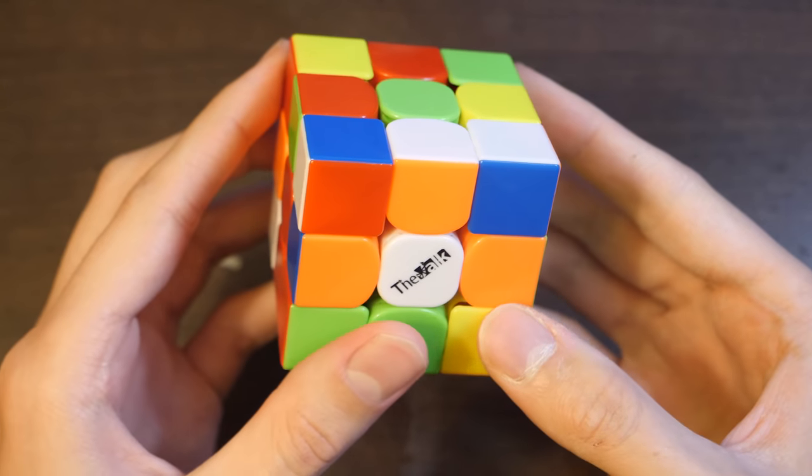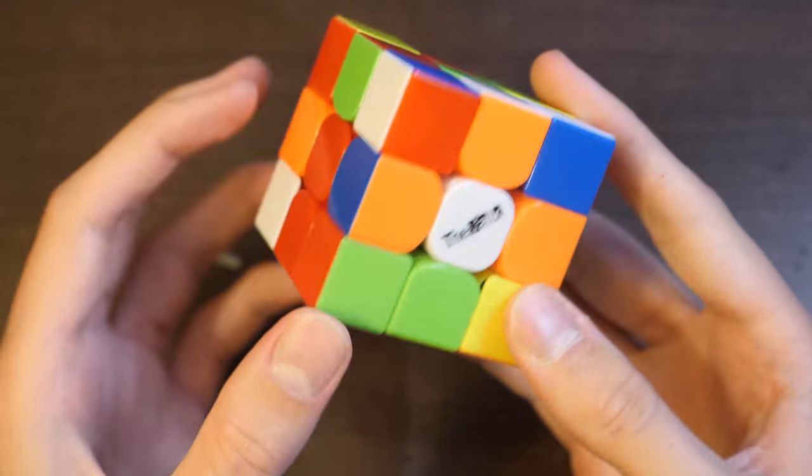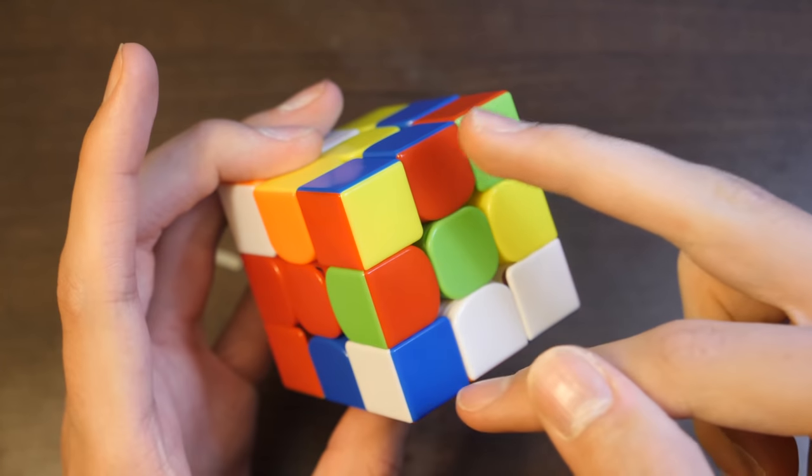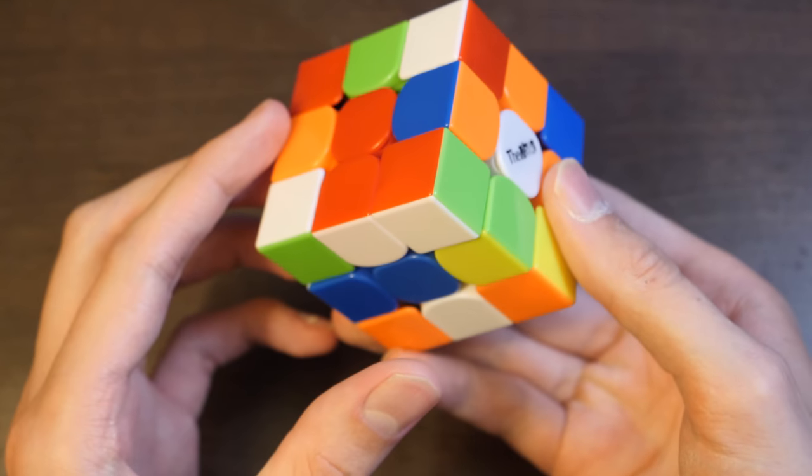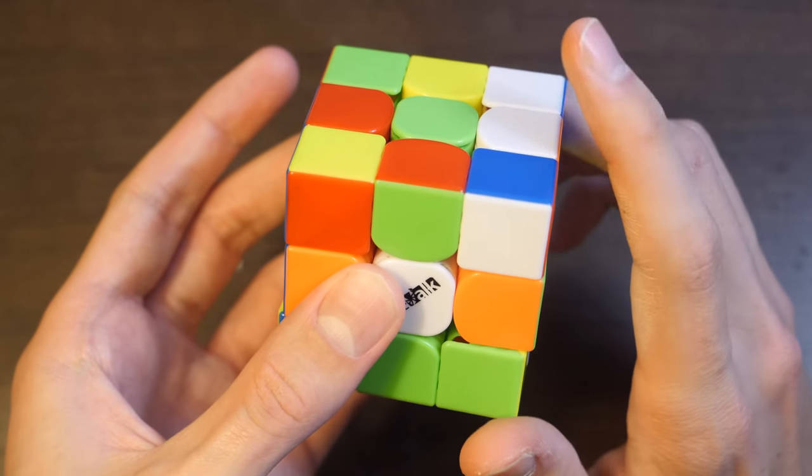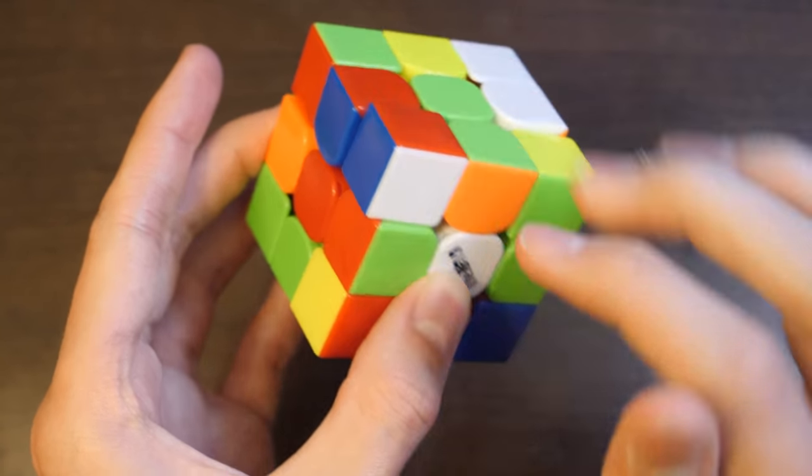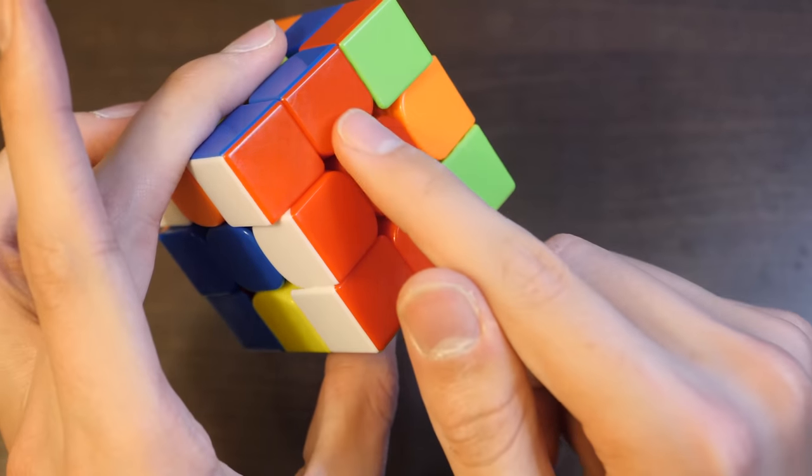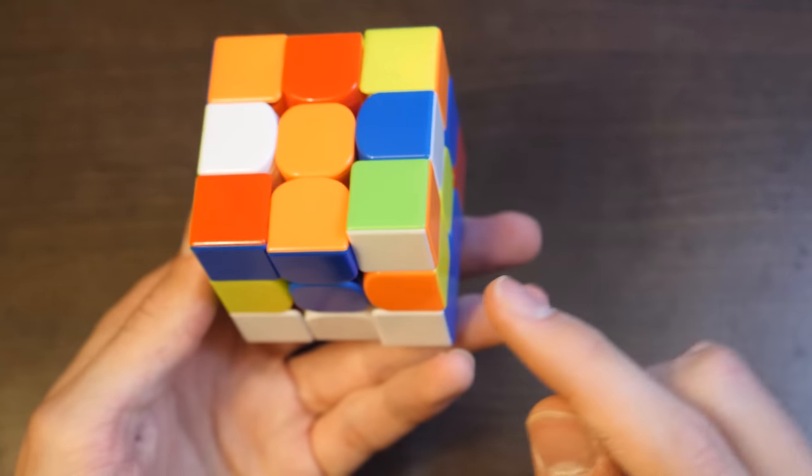For this third solve, Sean does the red-white block. He's got these two and these two. He's going to solve this edge while pairing up these two. The way he does that is he first moves this block out of the way and moves this edge into place, pairs up this pair while inserting that edge, brings it all back, and then inserts this to form the first block.